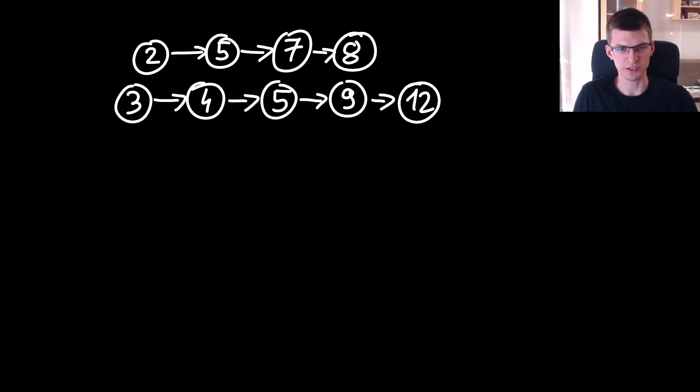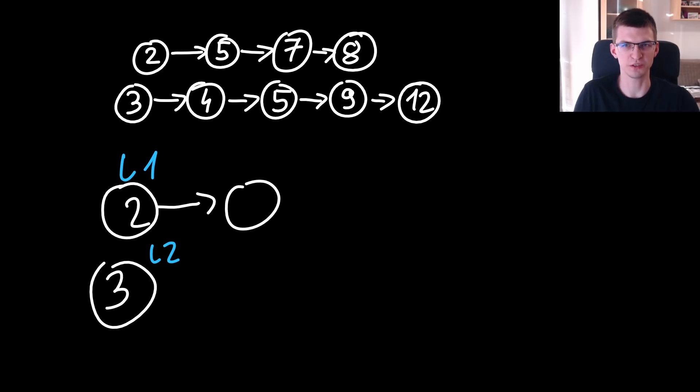The implementation will roughly be this: compare the first element of first list and the second one. Here first is smaller, so I will say this is the beginning, the head of the whole list, move pointer L1 to the next node in the first list.